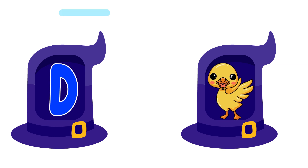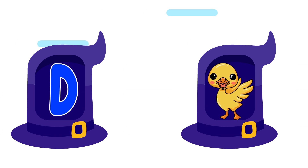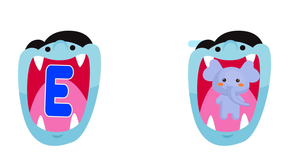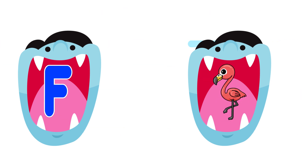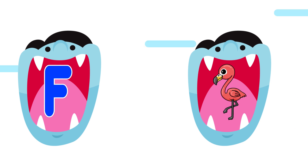D is for duck. Duck, duck, duck. E is for elephant. Elephant, elephant. F is for flamingo. Flamingo, flamingo, flamingo.